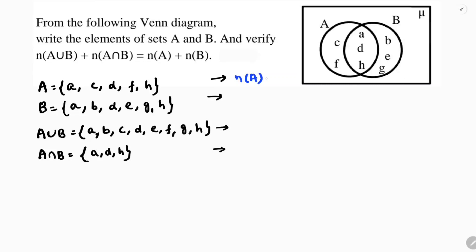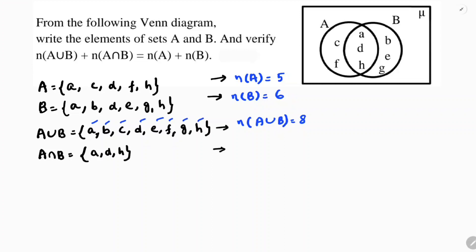Now we write the cardinal numbers. The number of elements in A is five. The number of elements in B is six. The number of elements in A∪B is eight — counting one, two, three, four, five, six, seven, eight. The number of elements in A∩B is three.